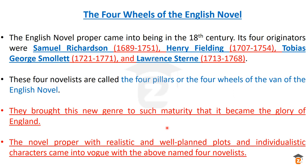The novel proper came with realistic and well-planned plots. Before these novelists, plots had nothing to do with writers — they would just write without connection between plot and subplots. These four novelists introduced well-planned plots and individualistic characters. Their characters had very clear individual views in the novels. All these qualities came with Richardson, Fielding, Smollett, and Laurence Sterne.